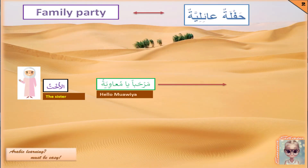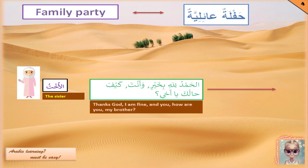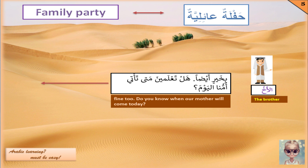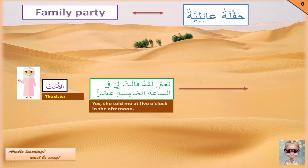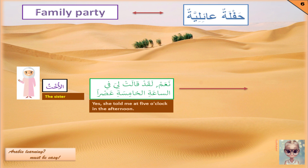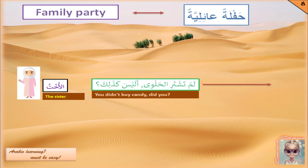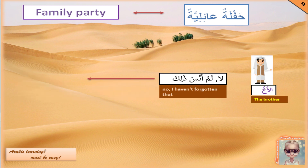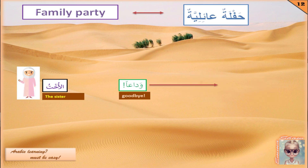I find the conversation very good and practical. Now it's time to practice the language through dialogue. You are the brother and I am the sister, so you can get started. The hosts then run through the full dialogue in Arabic: مرحبا يا عائشة — مرحبا يا معاوية، كيف حالك يا أختي؟ — الحمد لله بخير وأنت؟ — بخير أيضا، هل تعلمين متى تأتي أمنا اليوم؟ — نعم، في الساعة الخامسة عصرا — إذن سأبدأ بتجهيز نفسي — لم تشتري الحلوى أليس كذلك؟ — لا، لم أنسى ذلك — حسنا — إلى اللقاء — وداعاً. شكراً يا لواي. عفواً يا إيما.